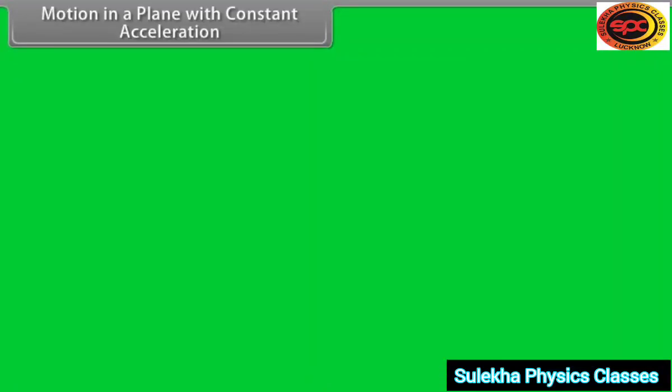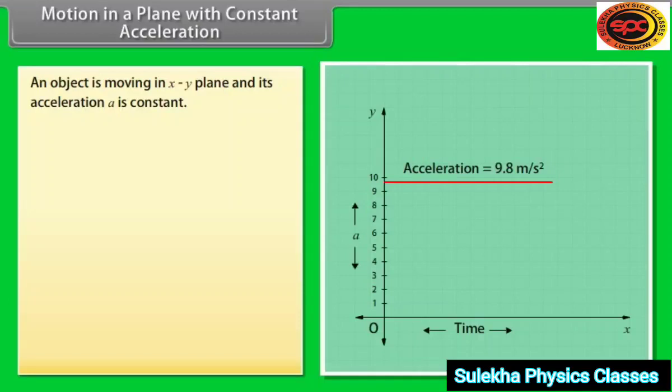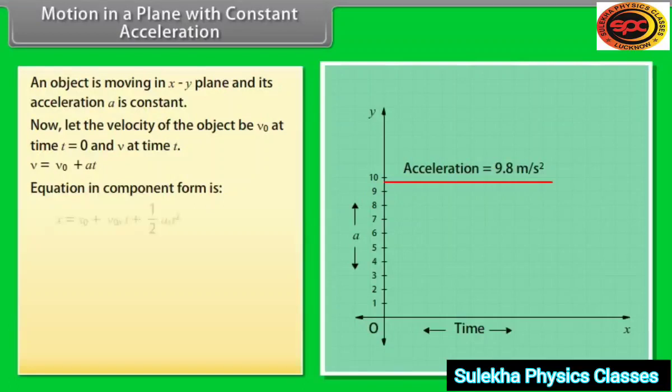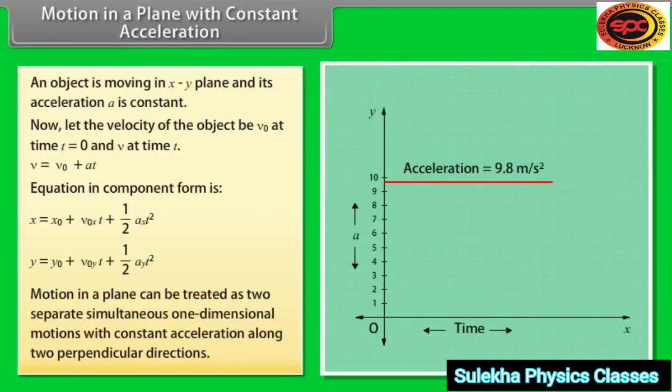Let us take an example to understand. An object is moving in XY plane and its acceleration A is constant. Now, let the velocity of the object be v₀ at time T = 0 and v at time T. v = v₀ + AT. This is the equation in component form. We conclude that motion in a plane can be treated as two separate simultaneous one-dimensional motions with constant acceleration along two perpendicular directions. These results are also valid for three-dimensional motion.